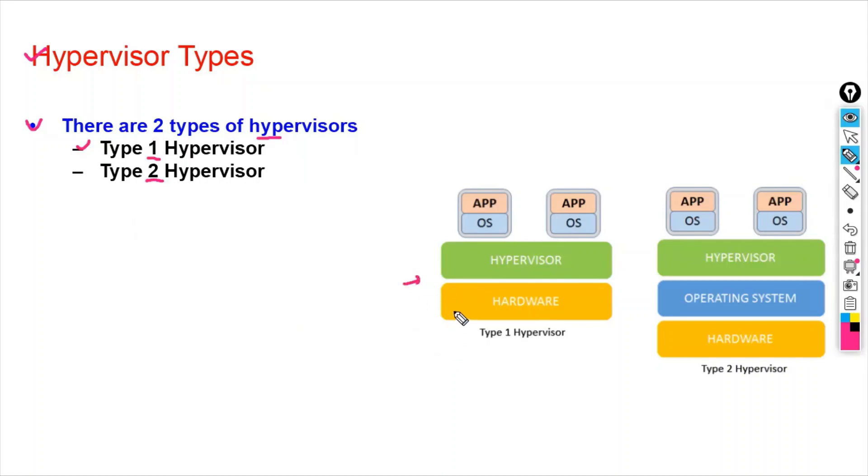Type 1 hypervisor runs directly on the server's hardware. You will take the server. Let's say this is a physical server. On top of this physical server hardware, you will install the type 1 hypervisor.